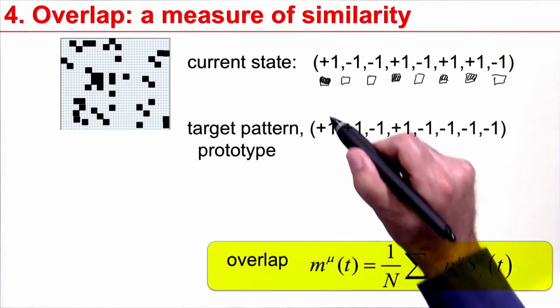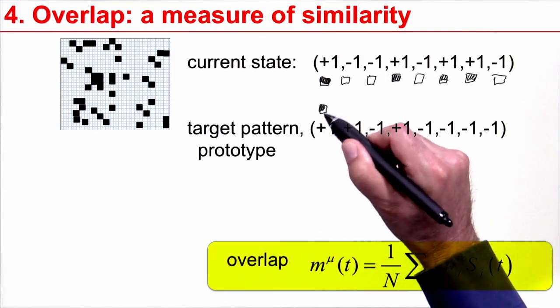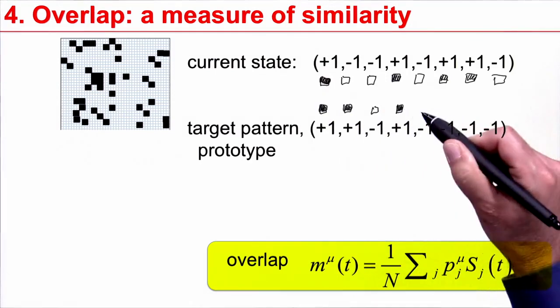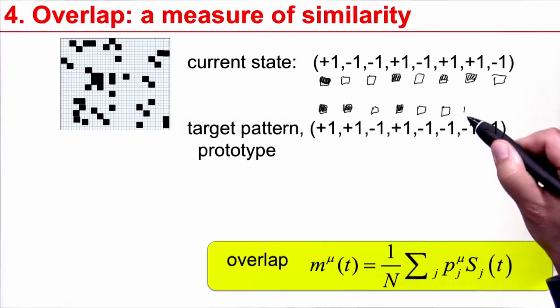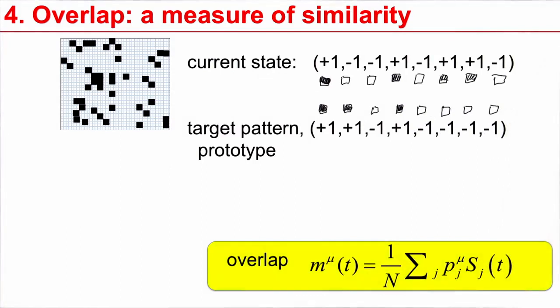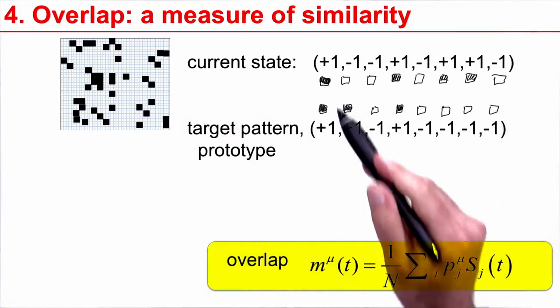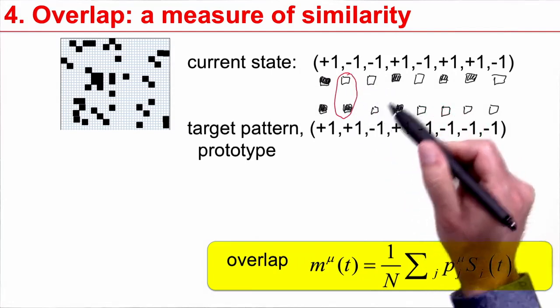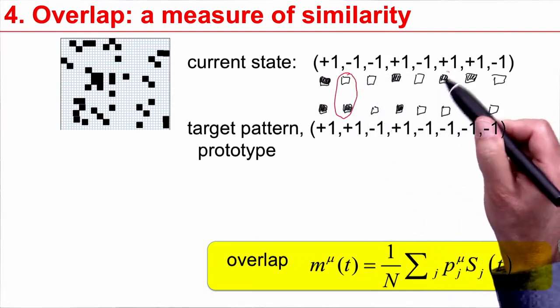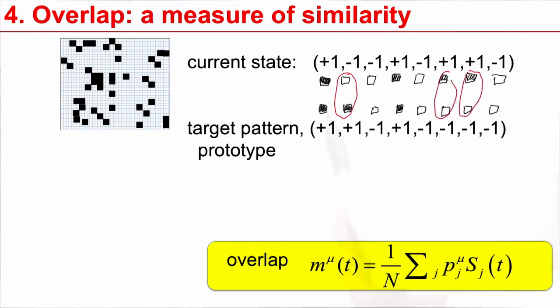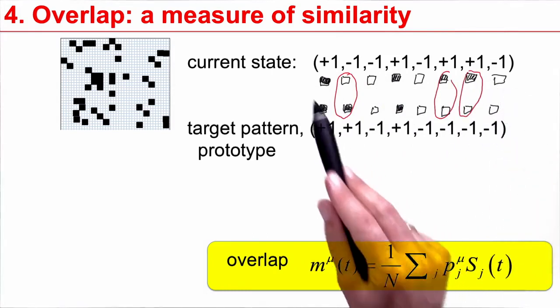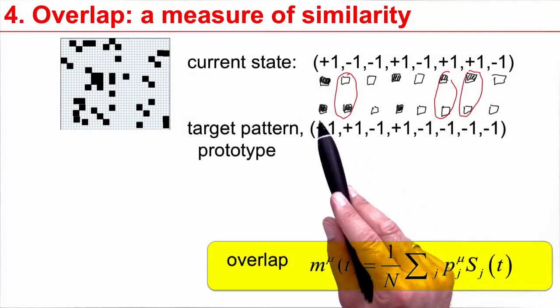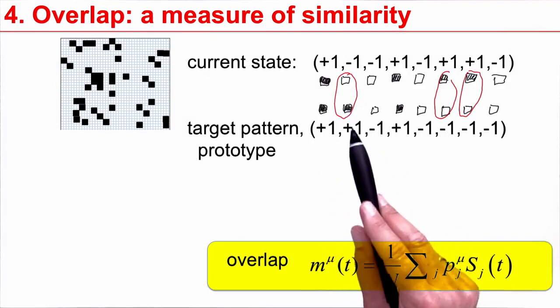Then I have a prototype pattern. The prototype also has black and white pixels in a slightly different configuration. In the algorithmic approach, we said we need to measure similarity. These pixels are the same, these pixels are not the same, these are the same, same, same, not the same, not the same. I have a certain number of pixels where the current state is already identical to the target pattern, and other pixels where this is not the case.